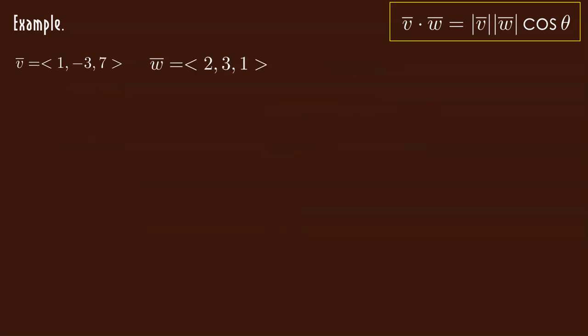Suppose I have 1, negative 3, 7, and 2, 3, 1. I find the dot product of these. I simplify and I get 0. 0 is magical. What does it mean? Well, if the dot product is 0, that means the cosine of theta is 0.